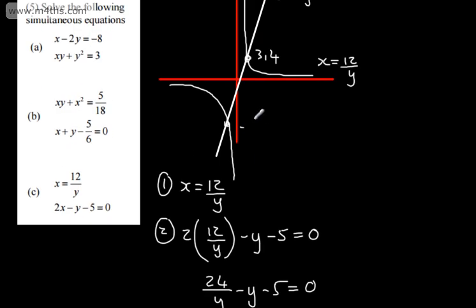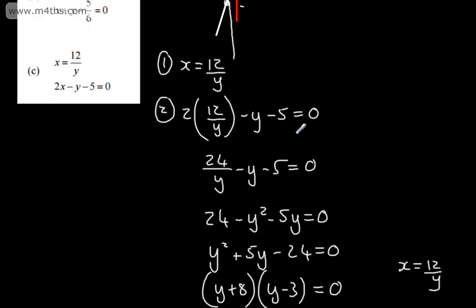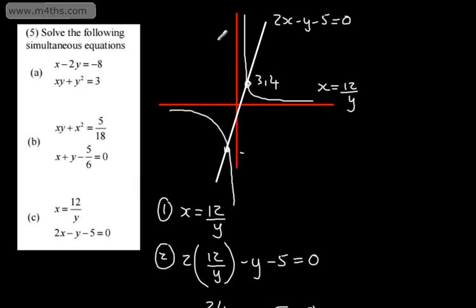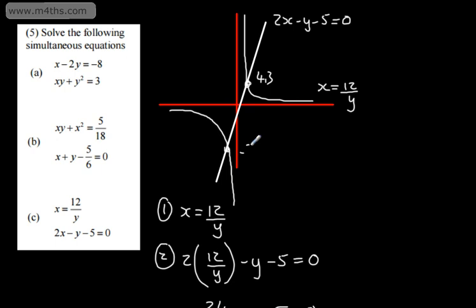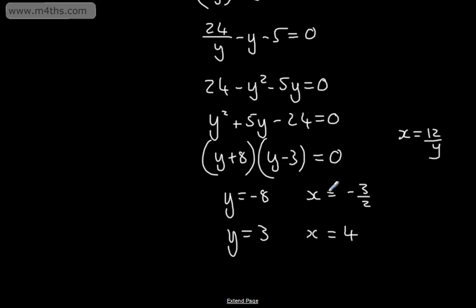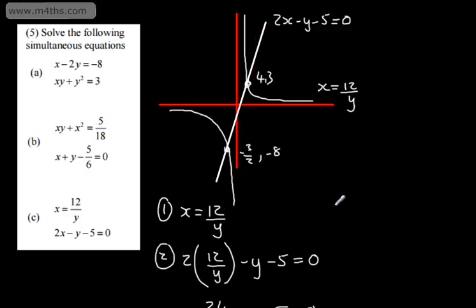Just checking we have the coordinates the right way around — the point is x then y, so that should be 4 comma 3, not 3 comma 4. And the other point is negative 3 over 2 comma negative 8. A rough sketch just helps you check you're not putting them the wrong way around, as I nearly did. We simply substitute in, solve for one variable, plug back into the other, and find it from there. So there we go — three questions looking at linear and non-linear simultaneous equations.